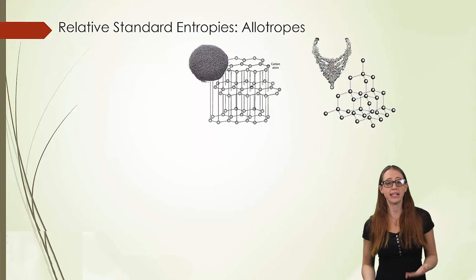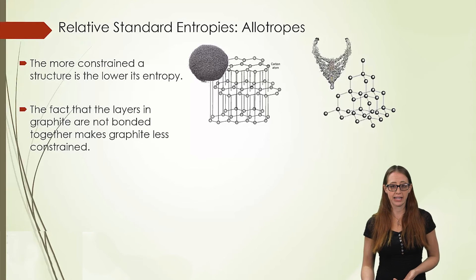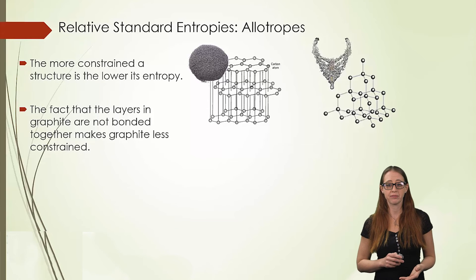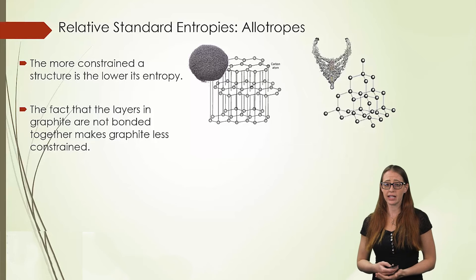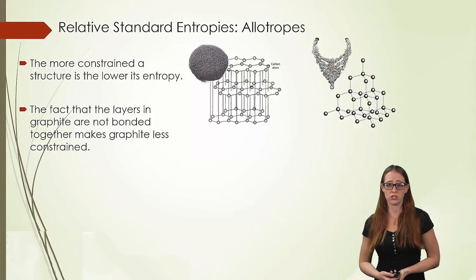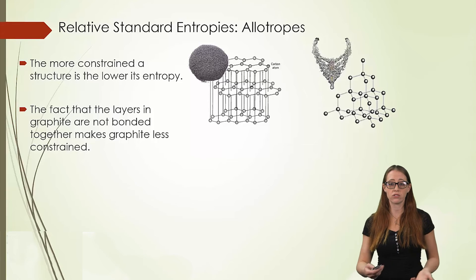If you compare the graphite and the carbon, the graphite layers are not bonded together. They're held together only by intermolecular forces. Meanwhile, the diamond is very tightly ordered into this three-dimensional structure, bonded in this tetrahedral manner. This makes graphite less constrained than diamond. Diamond is much more constrained.